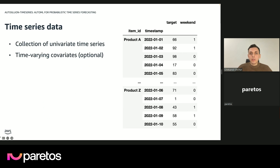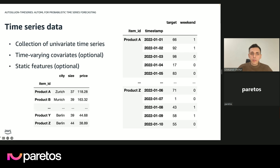Quite often we also have some additional information available — maybe some covariates. Sometimes these covariates can change over time: for example, an indicator of whether a day is a weekend or not, maybe whether there's a promotion, some weather forecast, or price information. We also have some static covariates that are connected to each time series but don't change over time — maybe the size of the product, its brand, the city where the product was sold, or the price if it doesn't change. Once we have this information in these two tables, this is essentially all we need to use AutoGluon Time Series and formulate our forecasting problem.